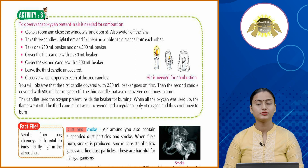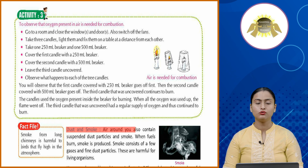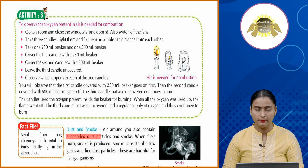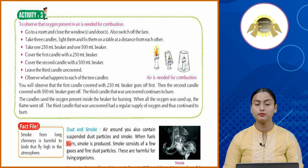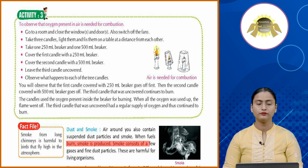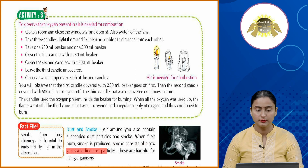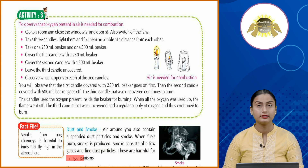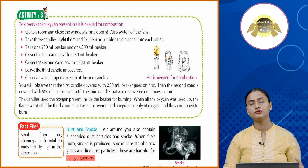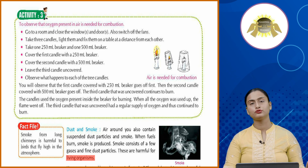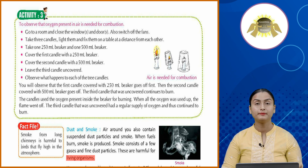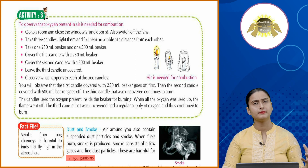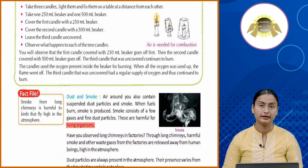Dust and smoke: Air around us also contains suspended dust particles and smoke. When fuels burn, smoke is produced. Smoke consists of a few gases and fine dust particles, which are harmful for living organisms. Smoke from different factories and industries becomes suspended in air and is harmful to human beings, animals, and plants.